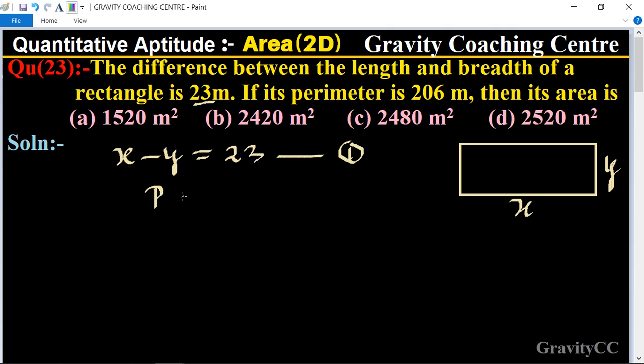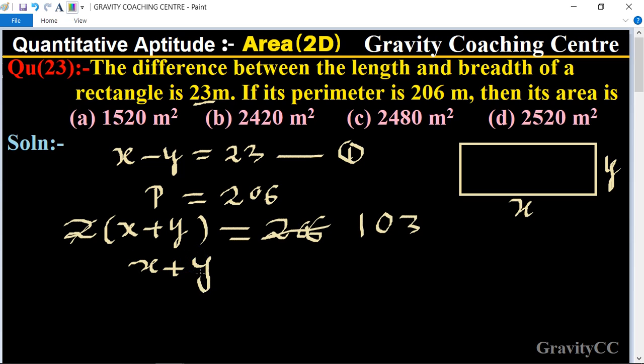And its perimeter is 206, so the formula of perimeter is 2(length plus breadth) equal to 206. 206 is cancelled by 2 to get 103, so x plus y equal to 103. This equation is the second.